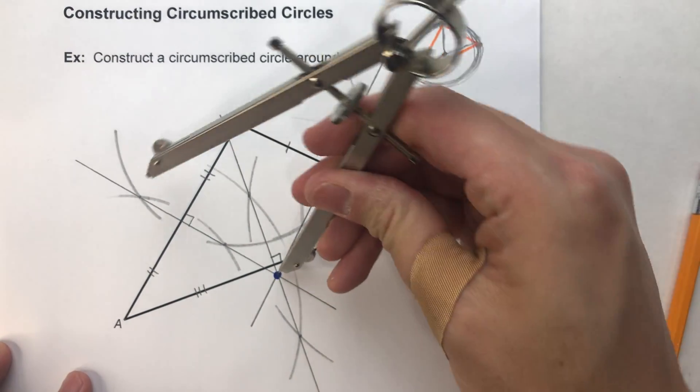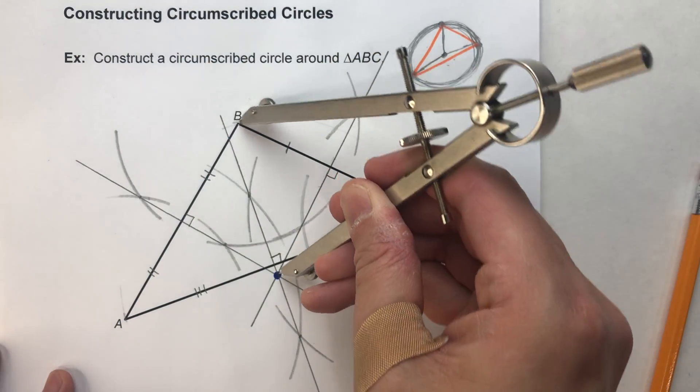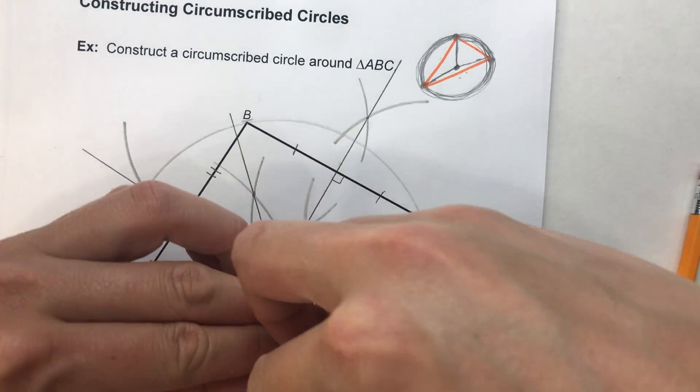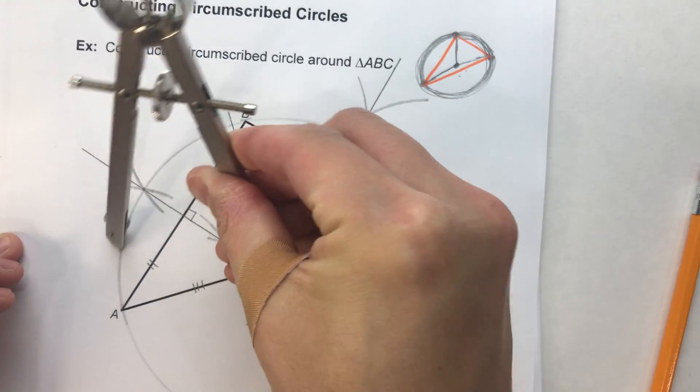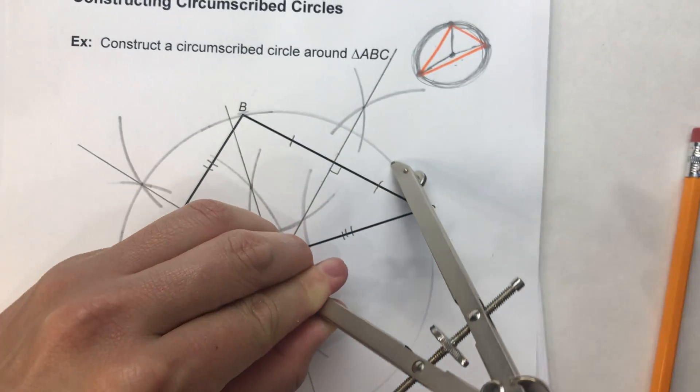To B, and then my circumcenter to A. Alright, see how they're all about the same? So now swing my circle all the way around. Let's see how I did. I think I'm pretty close. I might be a little bit off.